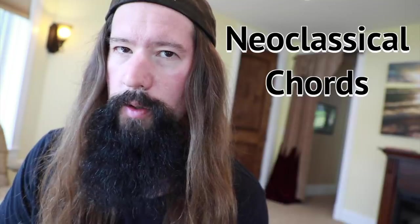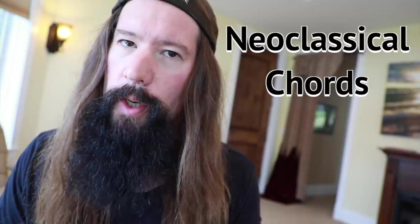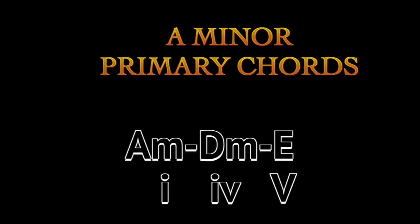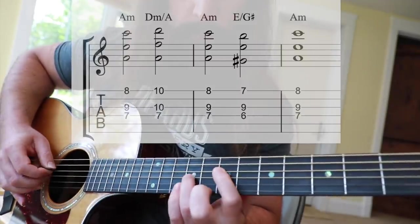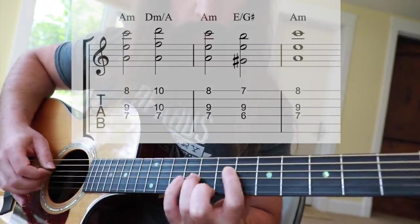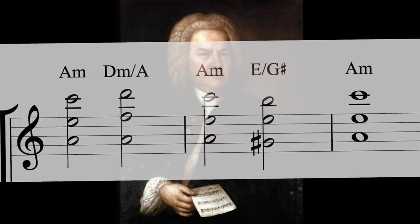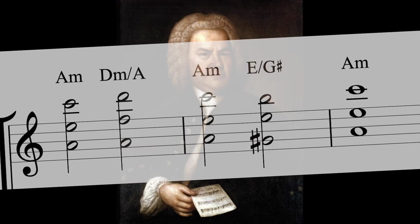Once you get the harmonic minor scale under your fingers, it's time to check out the chords that are generated from these magical notes. In the key of A minor, the primary chords for the classical sound are one, four, and five — A minor, D minor, and E. These chords form the basic framework you'll need to master the neoclassical sound.